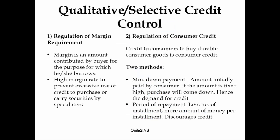Let's move to qualitative measures. The first one is regulation of margin requirement. Margin is the amount contributed by a buyer for the purpose for which he or she borrows. For example, if someone wants to buy a machine, he or she cannot get the full amount as a loan and has to contribute a certain amount. A high margin rate is fixed to prevent excessive use of credit to purchase or carry securities by speculators, thereby controlling credit and inflation.